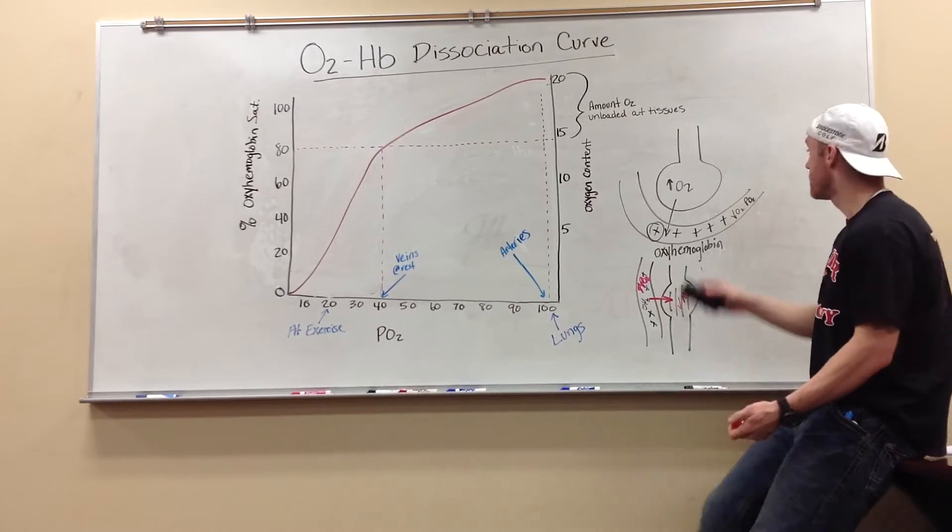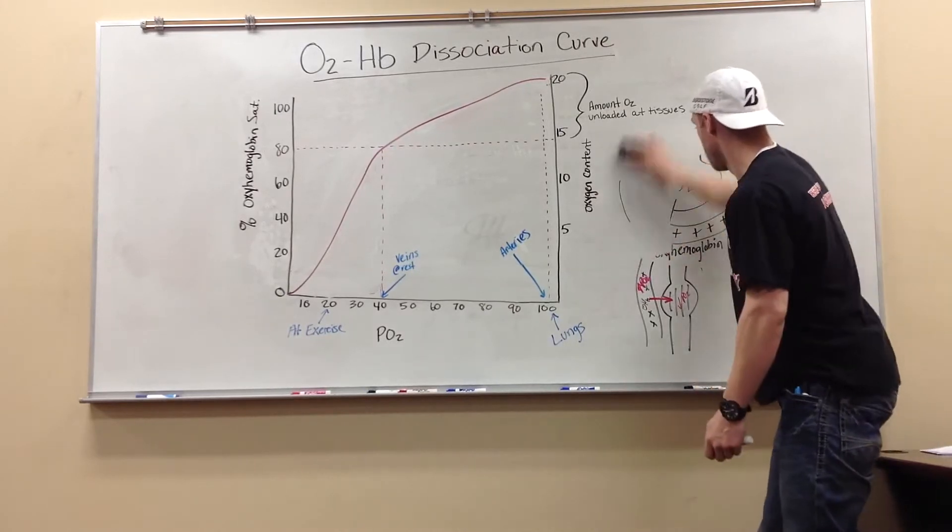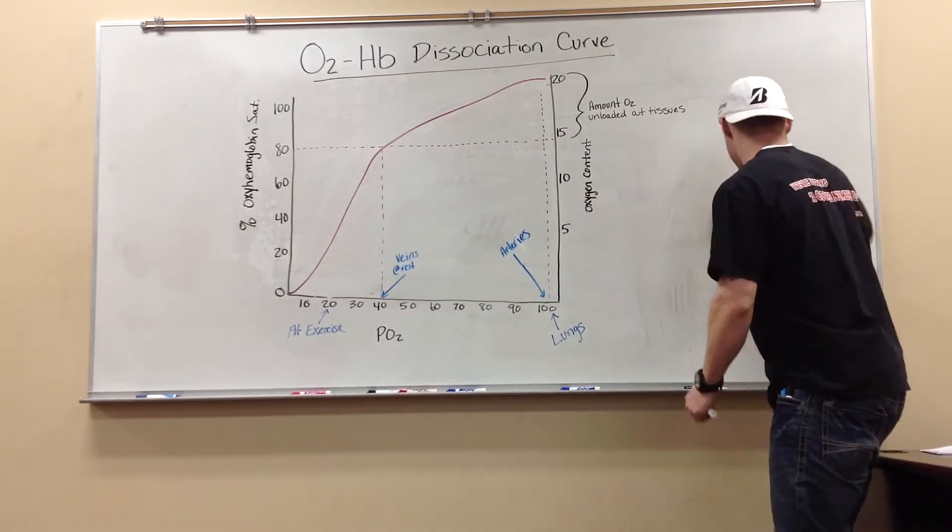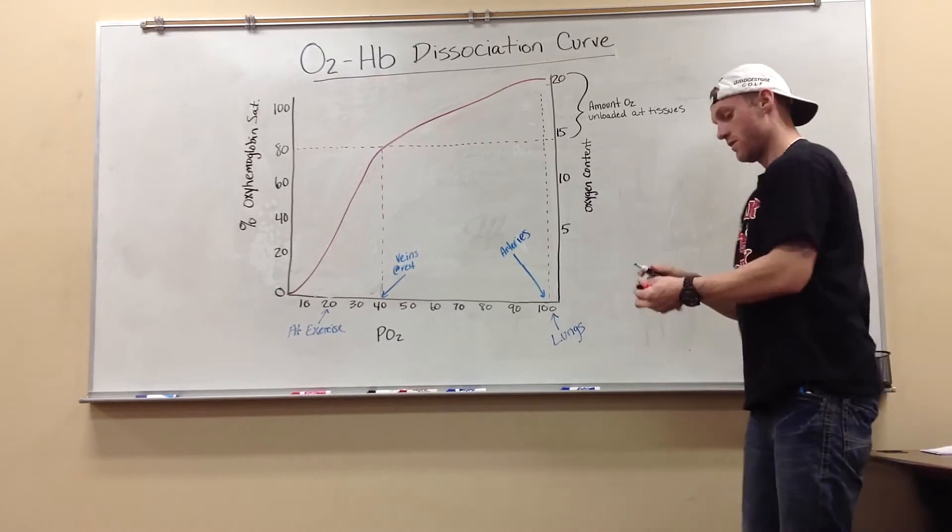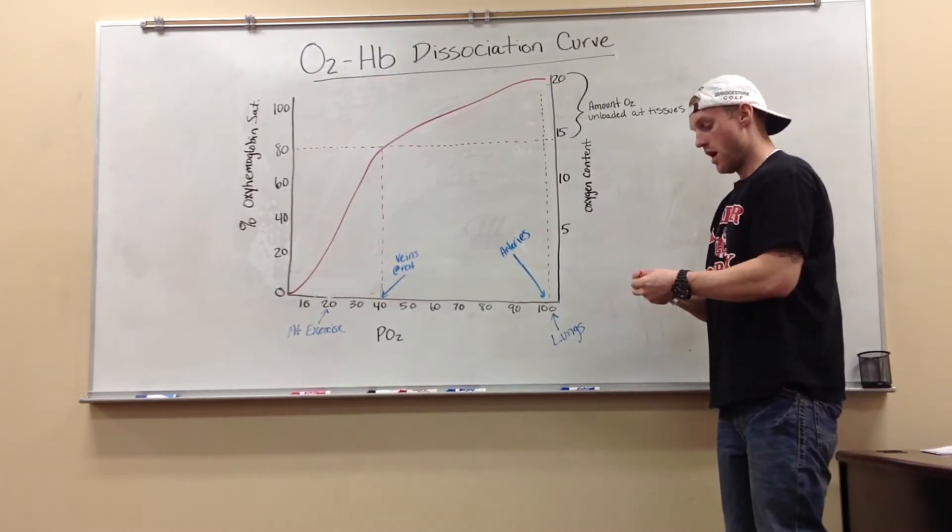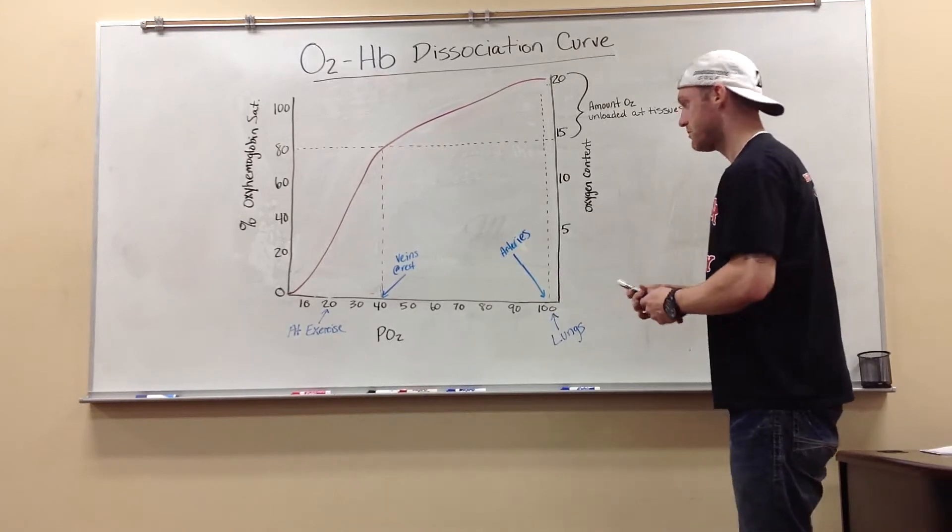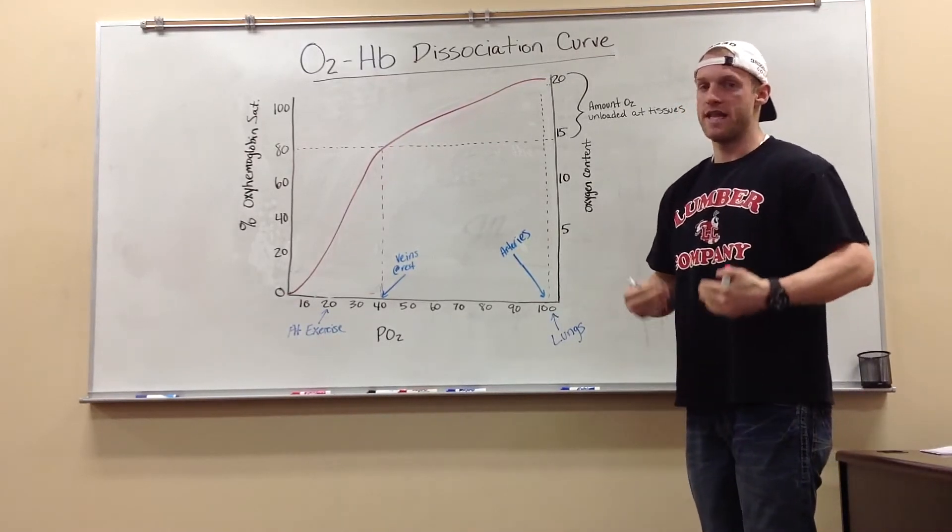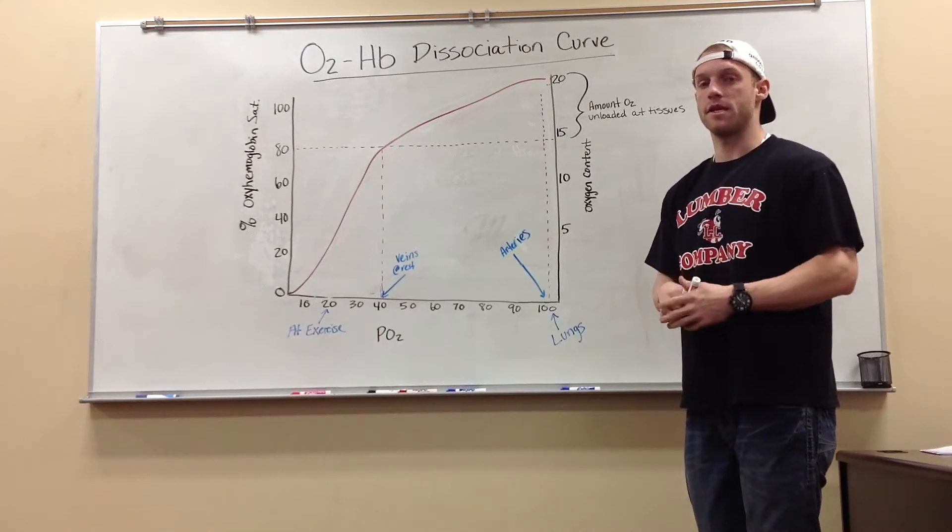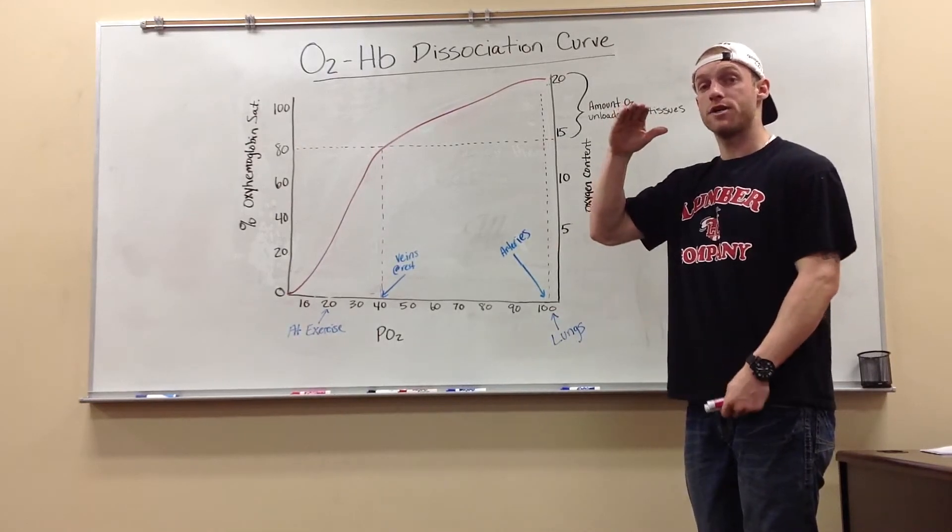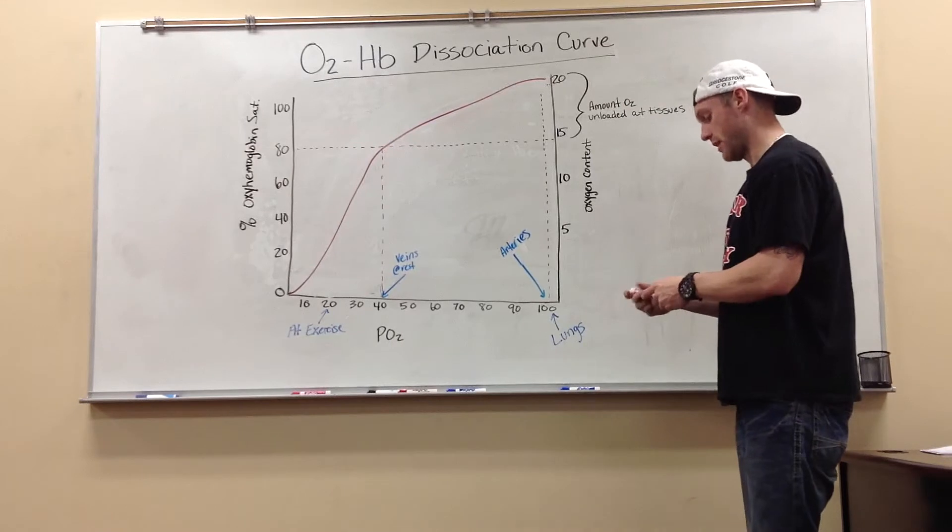So that's a big concept that I want you to know going into this graph. Oxygen just wants to follow the pressure gradient. And every gas has got a different gradient that it follows, but the main concept is that we go from high concentration to low concentration.